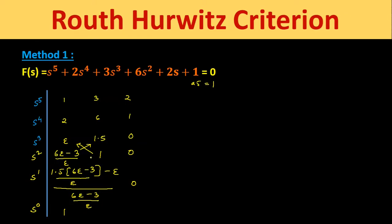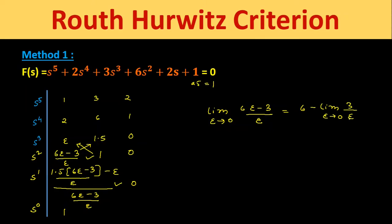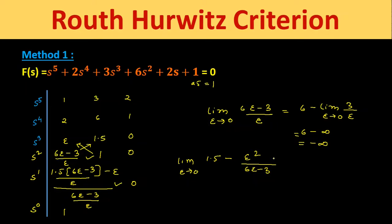Now we apply the limit epsilon → 0 to both expressions. For (6ε − 3)/ε: this equals 6 − 3/ε, and as ε → 0, 3/ε → ∞, so the result is −∞. For the s¹ row expression, simplifying gives (1.5 − ε²)/(6ε − 3). Applying limit ε → 0, the ε² term vanishes, giving +1.5.